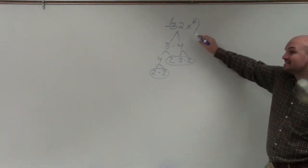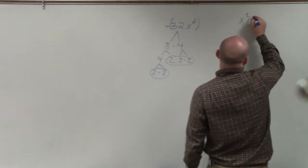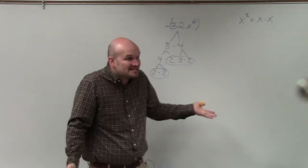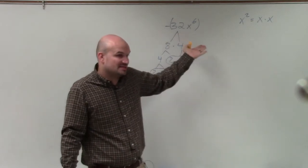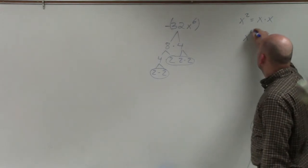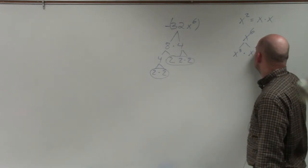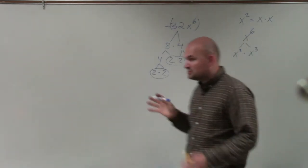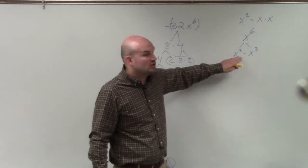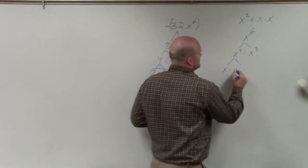Let's go ahead and break down x to the sixth. If you guys remember, x squared is equal to x times x. So x to the sixth is basically x multiplied six times. I also want to show you a couple different ways you can break this down. You can rewrite x to the sixth as x cubed times x cubed. If you guys remember your rules of exponents, when you multiply two exponents, you add the powers.